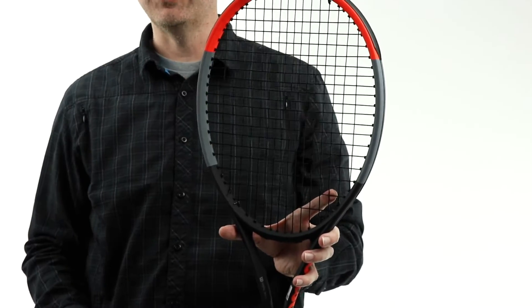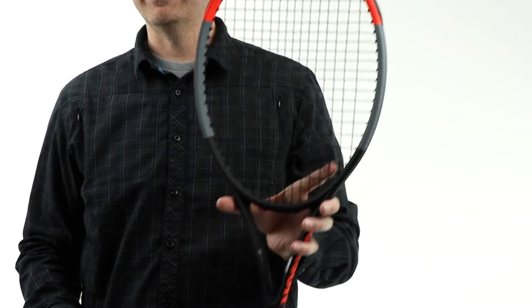Personally, semi-western forehand. I did a lot of top spin, slice, things of that nature. Not so wide that it gets in the way by any stretch, but just a really nice versatile specification. Again, a hundred square inch head, open 16 by 19 string pattern.